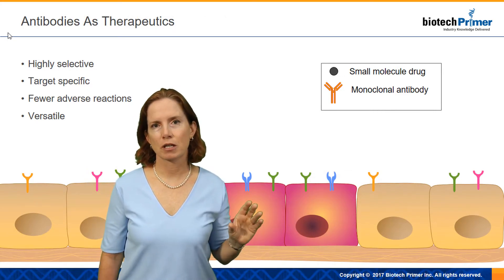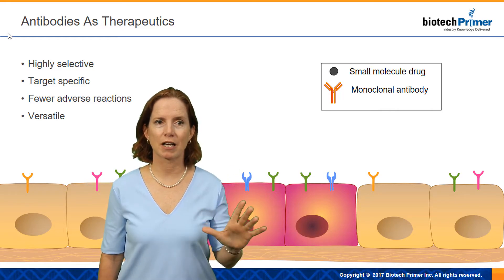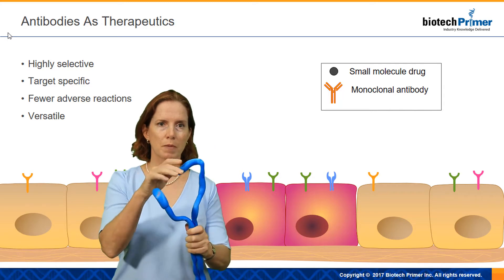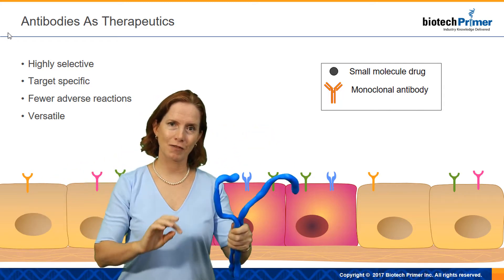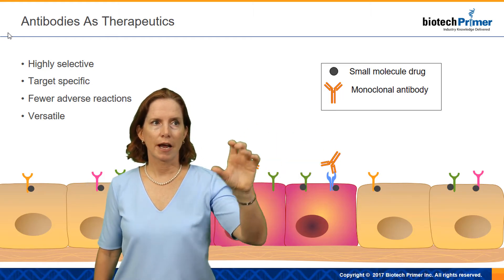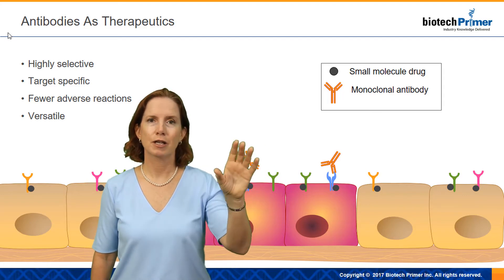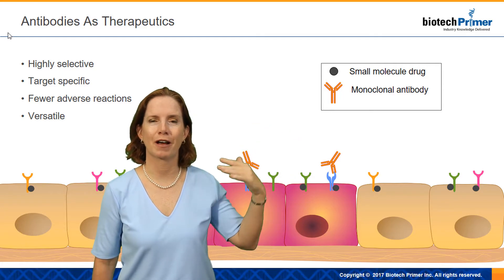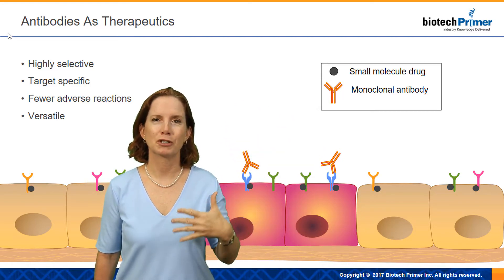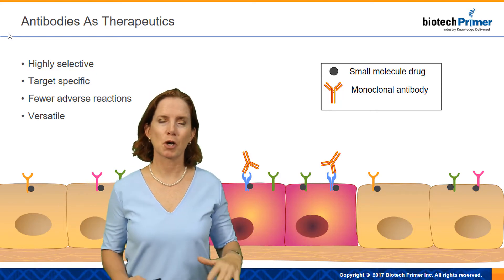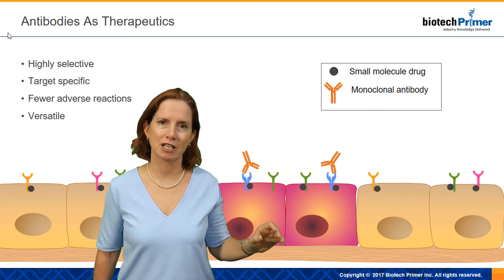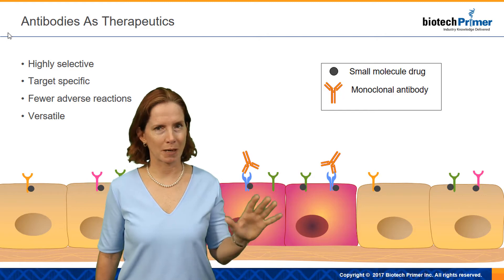Scientists have taken this characteristic of antibodies — their ability to very specifically recognize one unique target — and adapted them as therapeutics. Because of that high specificity, one shape recognizes one target and a different shape recognizes a different target, that specificity makes them very selective. As the slide shows, antibodies will typically recognize one and only one target. In contrast, small molecule drugs can recognize multiple targets, so in general we have less target specificity with small molecule drugs. That's one of the things that makes antibodies such attractive therapeutics.